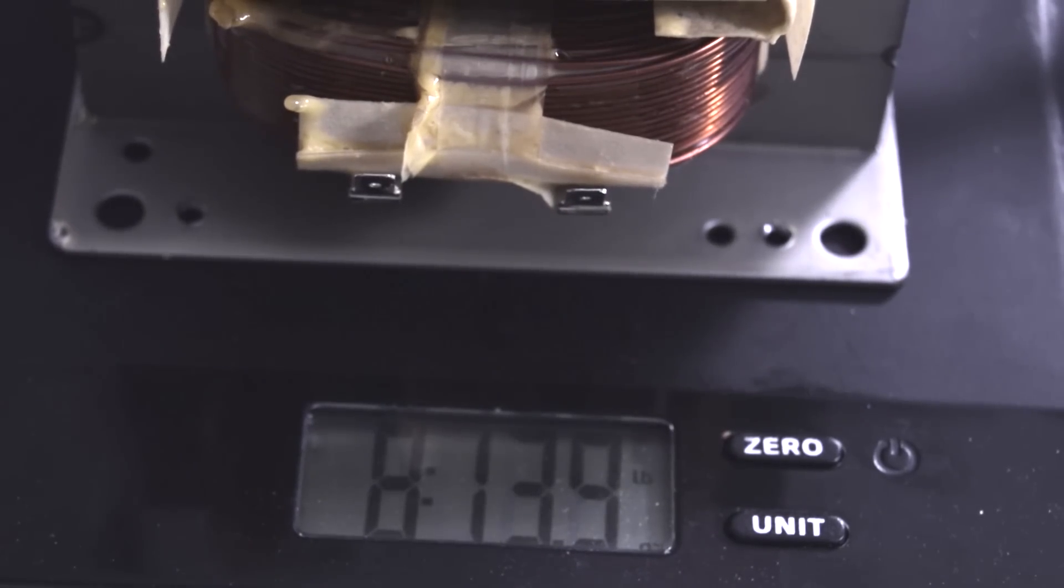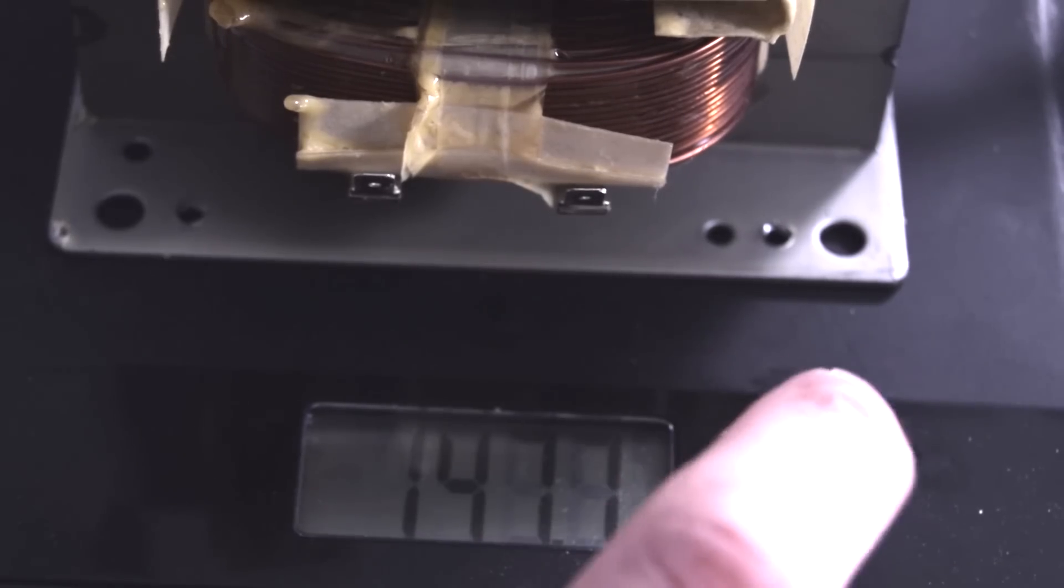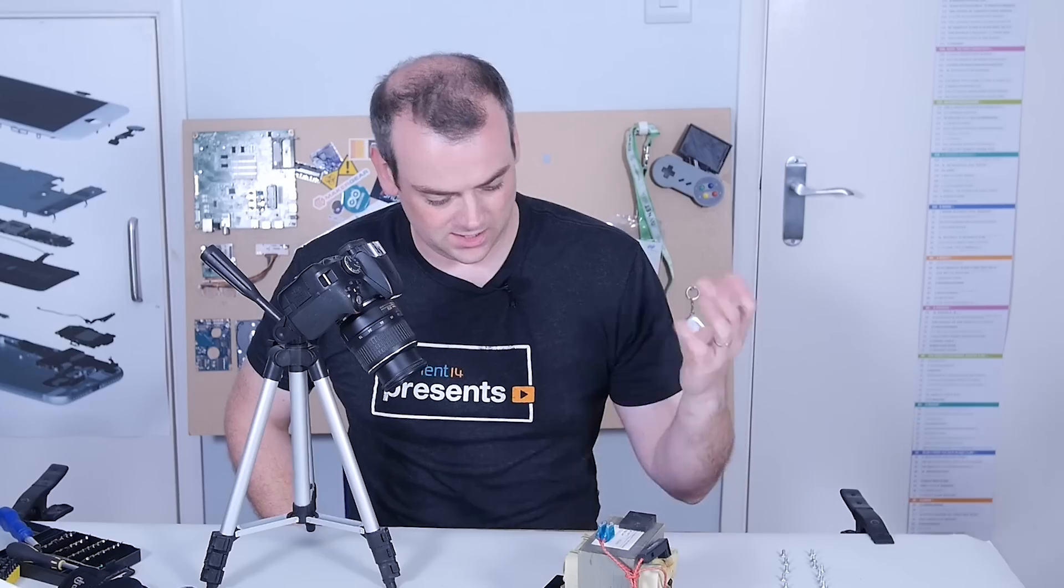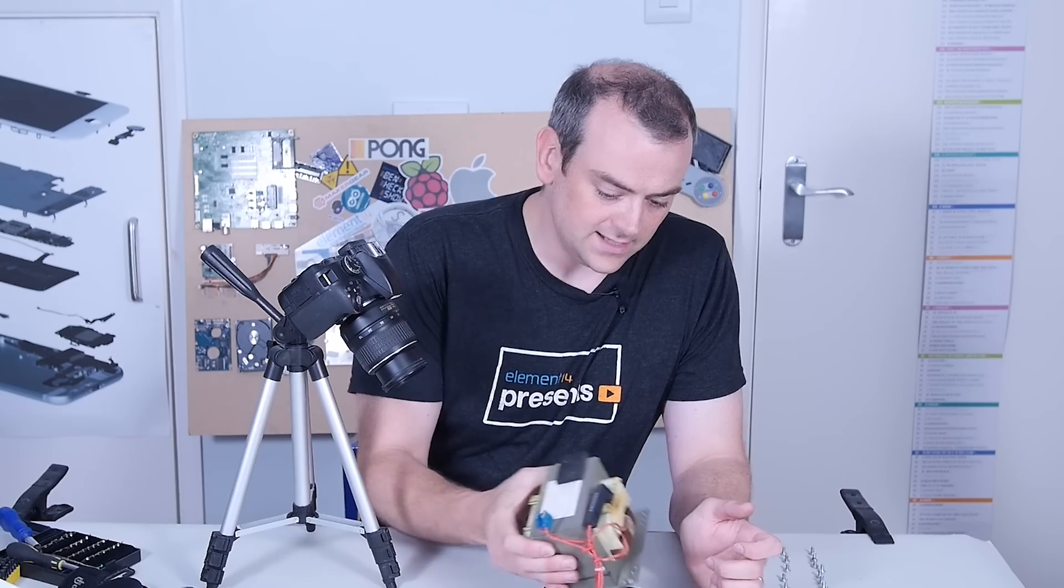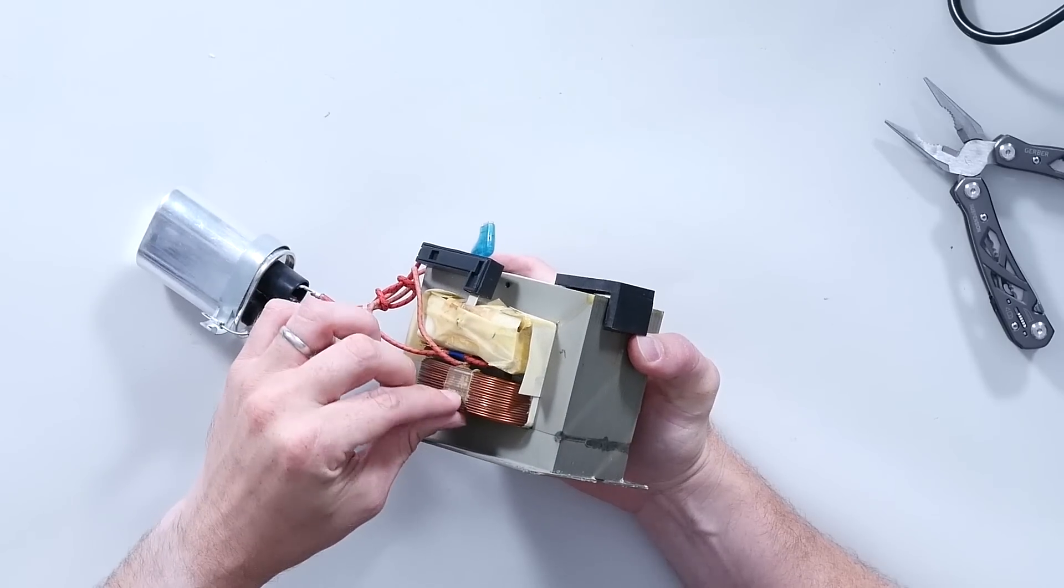For anyone that's interested, the transformer is 8.13 or 8.14 pounds, which is just over four kilograms. Just this nice, very big, high power. I'm guessing this is going to be rated at probably about a kilowatt. Great windings though. They're just not potted. They're ceramic coated wires.